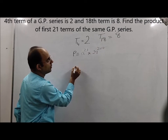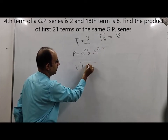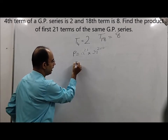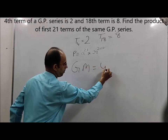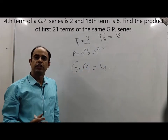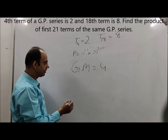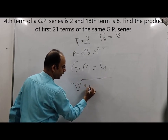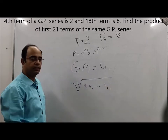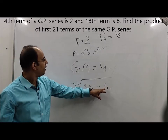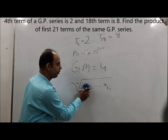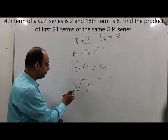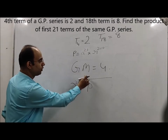Since the 4th and 18th terms are equidistant from the ends, their geometric mean equals the geometric mean of the entire 21-term series. The geometric mean of the 4th and 18th terms is √(2 × 8) = √16 = 4. Therefore the geometric mean of these 21 terms is 4. By definition, the geometric mean of n terms is the nth root of the product of all terms.